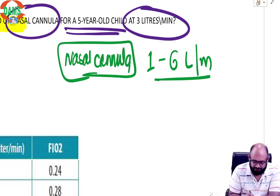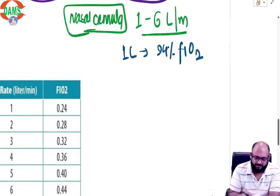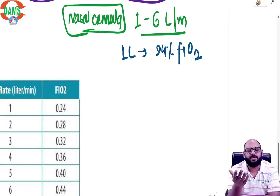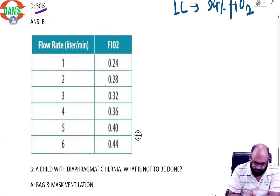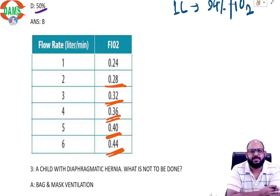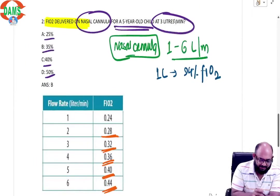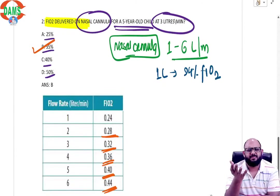Now what we say is that one liter would give us around 24% FiO2. 21% is what you are breathing normal air. And then every liter above that, it would be adding 4% to it. So two liter would give 28, that is 4% more, three liter 32, four liter 36, five liter 40 and six liter 44. So the option, the nearest closest option was 35 because three liter is 32. So we'll take 35 as the correct answer.